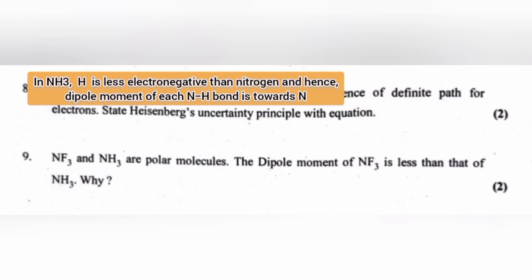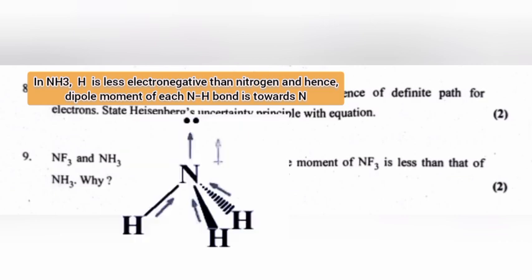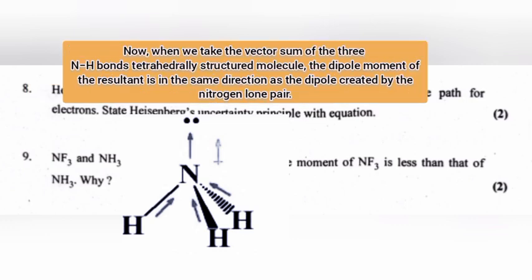In NH3, H is less electronegative than nitrogen and hence the dipole moment of each NH bond is directed towards N. When we take the vector sum of the three NH bonds in this tetrahedral structured molecule, the dipole moment of the resultant is in the same direction as the dipole created by the nitrogen lone pair.